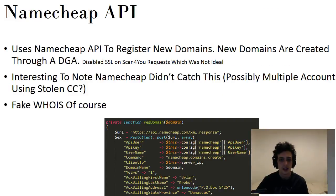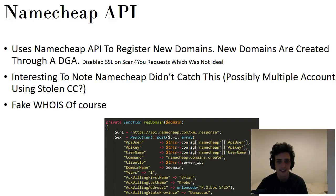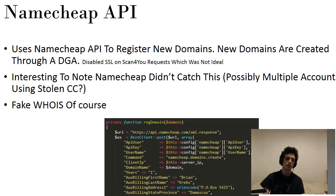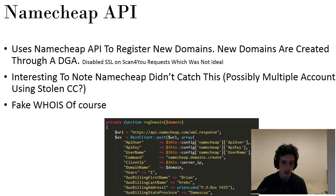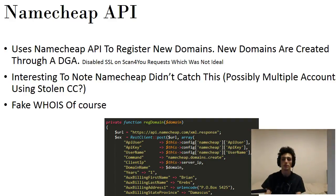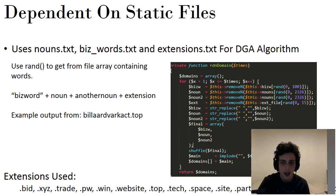The Namecheap API is used to register new domains. Exploit kits need a fresh supply of domains every single day because they get marked as malicious. I don't know if this is Namecheap's fault or just that they're very attractive to hack forums users. The WHOIS isn't exactly verifiable, but it's interesting to note that it is Namecheap — possibly multiple accounts using stolen credit cards, or just incompetence from Namecheap. That's a different story altogether.